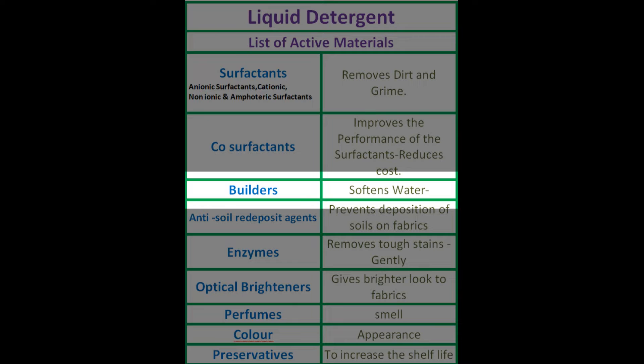Let us try to understand this point. Generally, during the washing process, the water we are using is hard water — I mean, salt water. These hardness-causing ions will disturb and interact with surfactants, reducing their washing performance. When we add builders, builders will convert hard water into soft water and allow the surfactants to do their role perfectly.